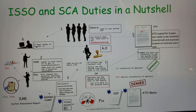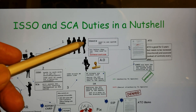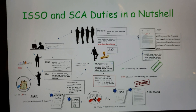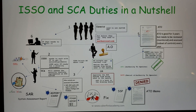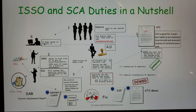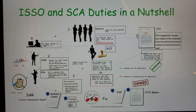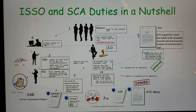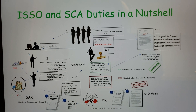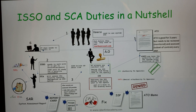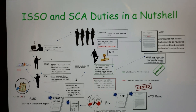Step one: users are trying to get their system authorized. They go to the ISO and say, 'Hey, I need to get my system authorized.' The ISO walks them through the authorization process — categorizing the information system and guiding them on which security controls to apply.